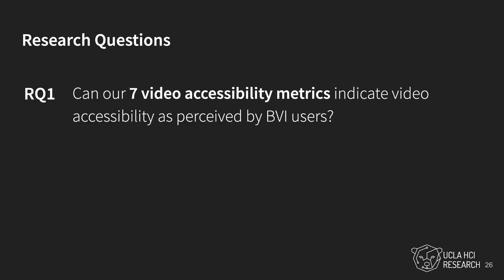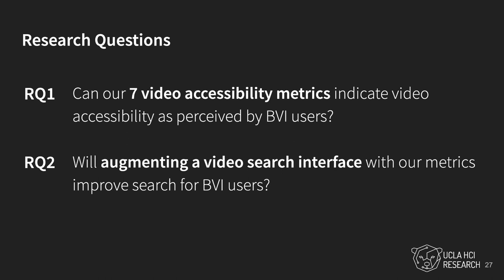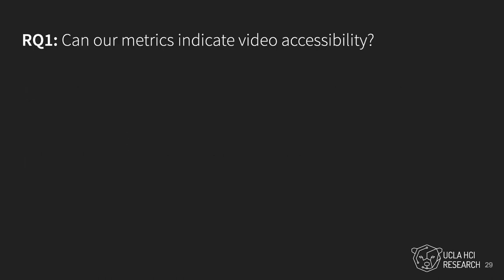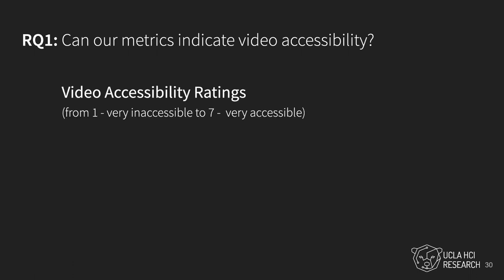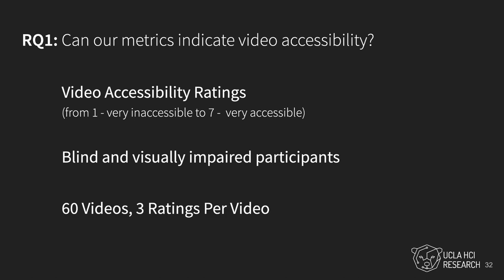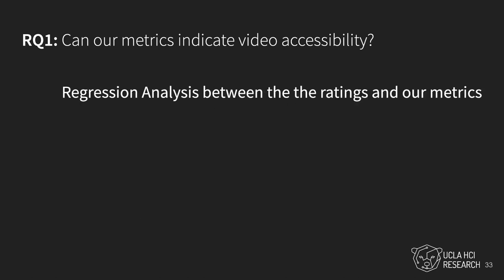We asked two research questions in our paper. First, can our seven video accessibility metrics indicate video accessibility as perceived by blind and visually impaired users? Second, will augmenting a search interface with our video accessibility metrics improve video search for blind and visually impaired users? To see if our seven metrics indicated accessibility, we collected accessibility ratings from blind and visually impaired users for 60 videos.